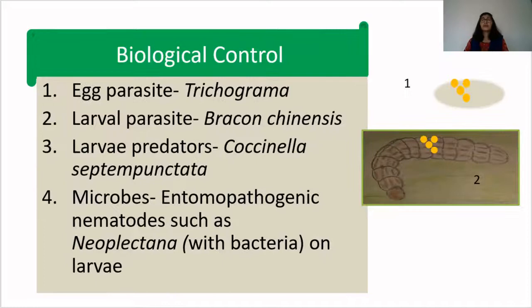The third method is biological control. The first category is egg parasites. There are many insects that are egg parasites of other insects. One example is Trichogramma, which is an egg parasite of the Jawar stem borer. The Trichogramma female lays eggs on the eggs of the Jawar stem borer, and the larvae that emerge from the Trichogramma eggs feed on and destroy the stem borer eggs.